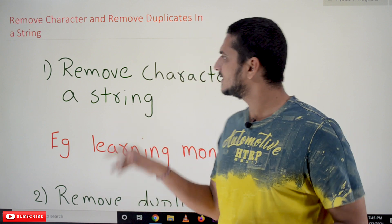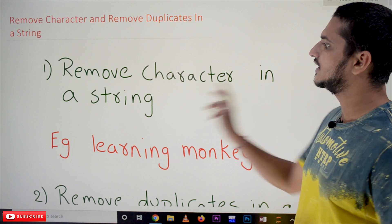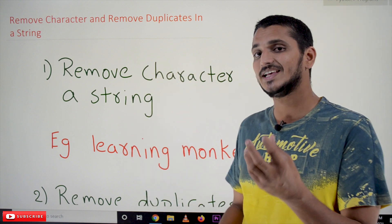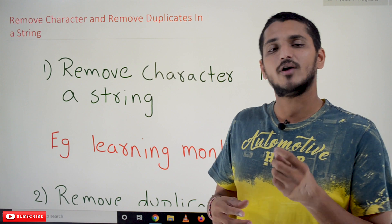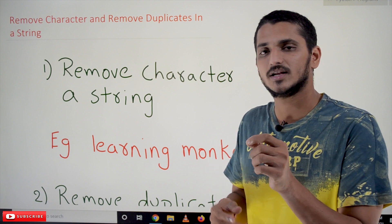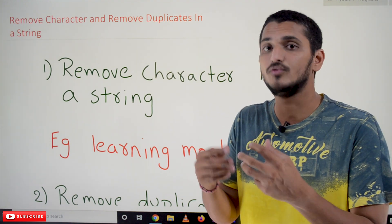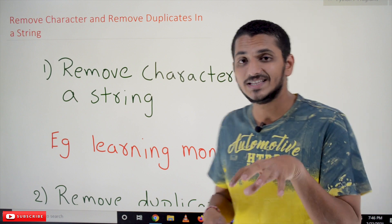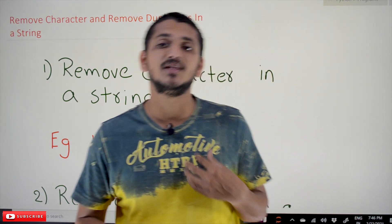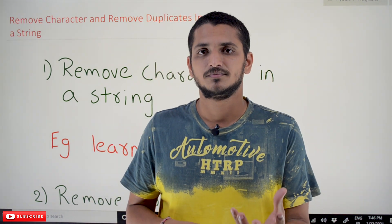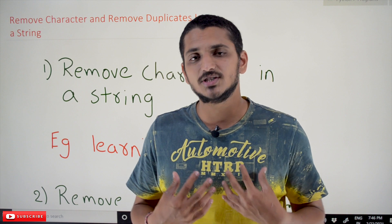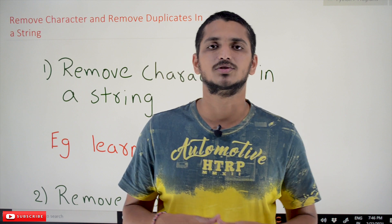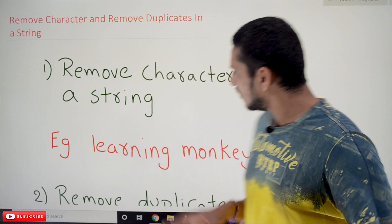Coming to today's example, the first example is: remove a character from a given string. We will take some input as a string, and from that we have to remove a mentioned character. With these examples we will understand the benefits of Python. Our suggestion is: take the question, do it on your own, then check for the solution.